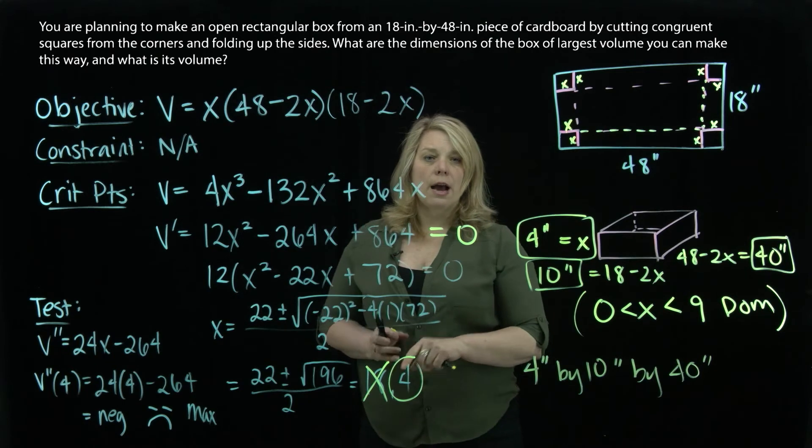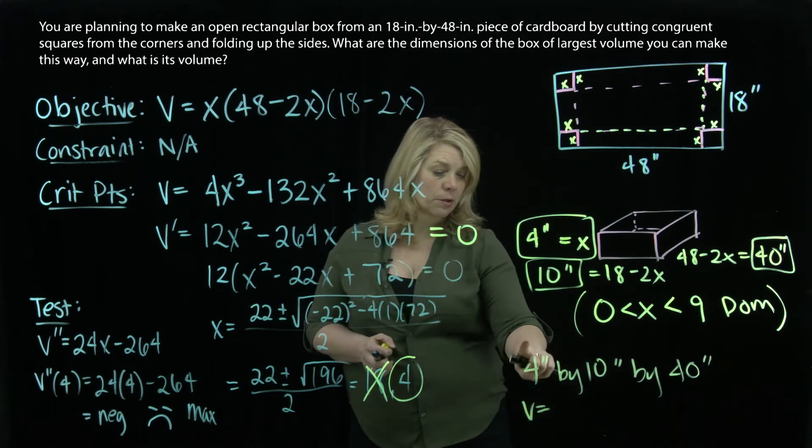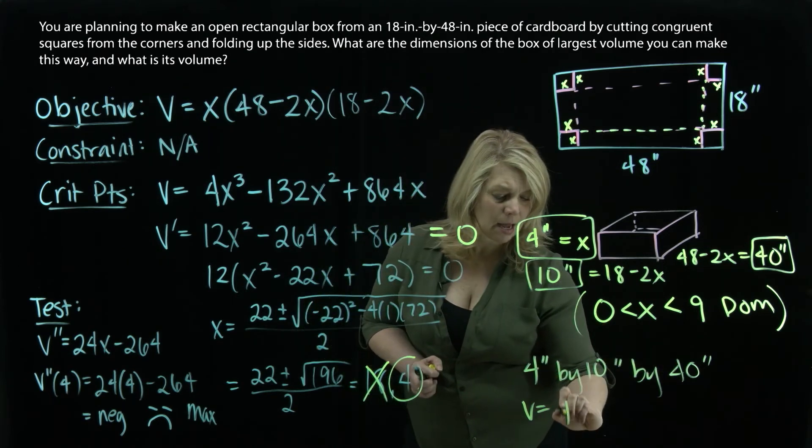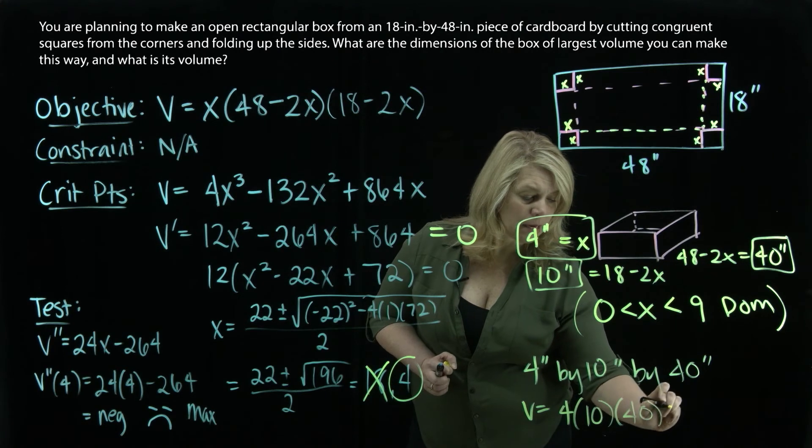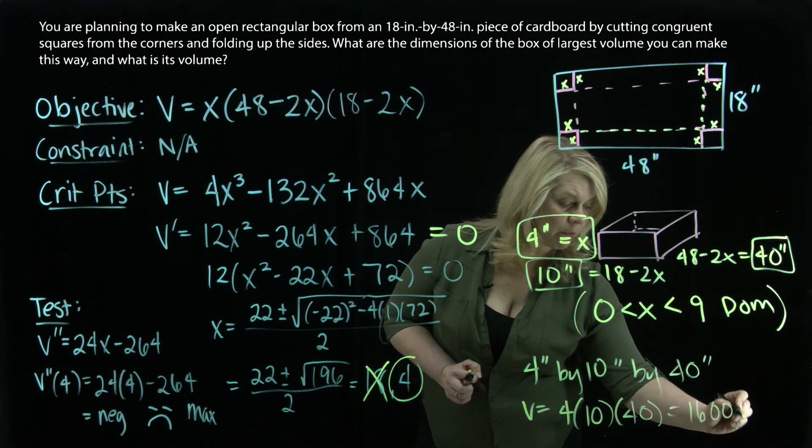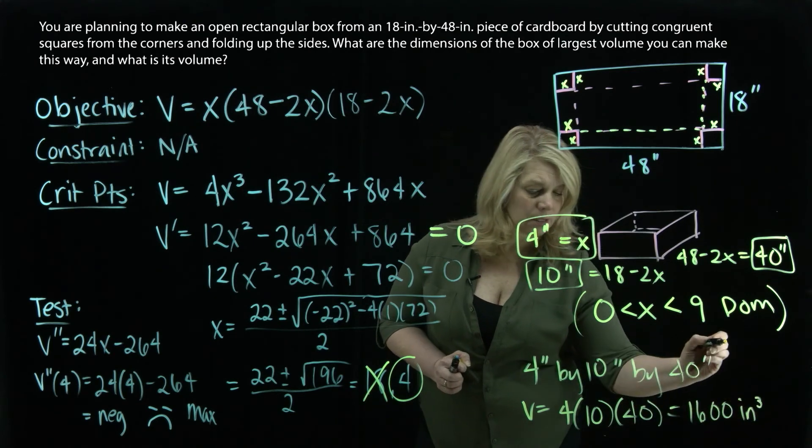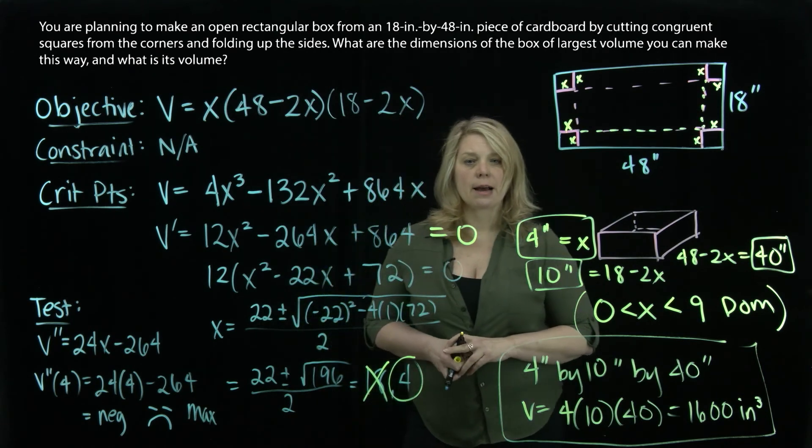And then it also asks us, what is its volume? So I also need to calculate that volume. So the length times the width times the height. So 4 times 10 times 40. So multiply that out, 1,600. And that would be in cubic inches, would be the maximum volume. So there's the answer to the question that we were asked.